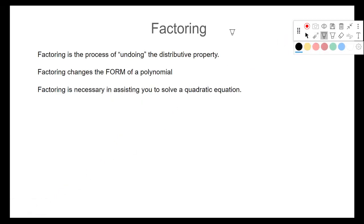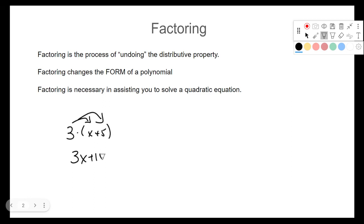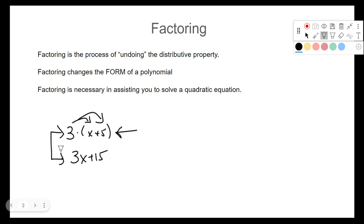Just to review: factoring is the process of undoing the distributive property. So if I had something like 3 times the quantity x plus 5, and you distribute the 3, you would get 3x plus 15. If I ask you to factor it, I want you to write the answer as 3 times the quantity x plus 5 — undo the distributive property. Factoring changes the form of a polynomial; it does not change its value. Both expressions equal 3x plus 15, just written in two different ways.